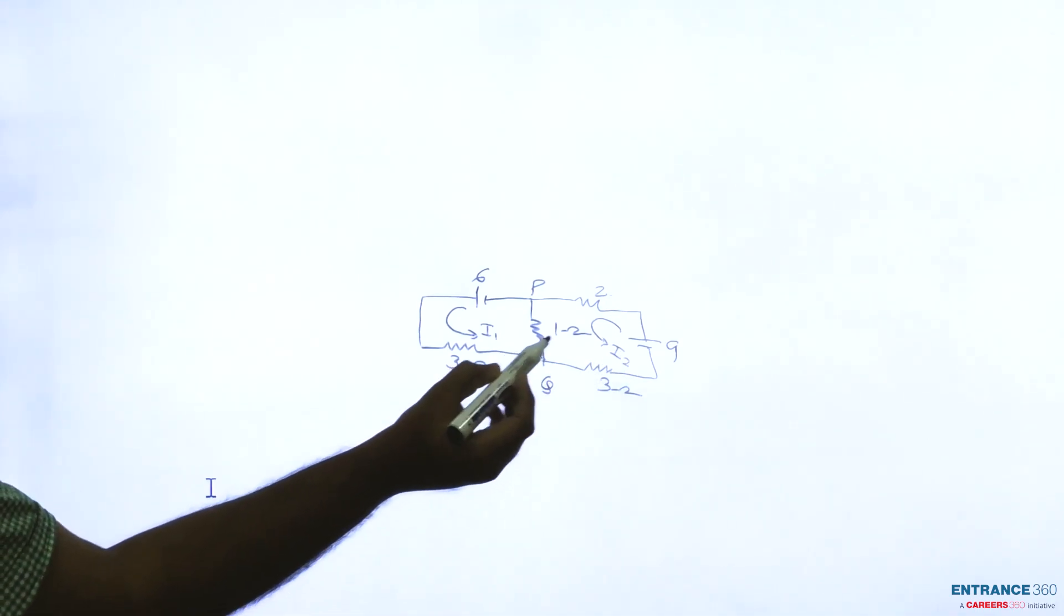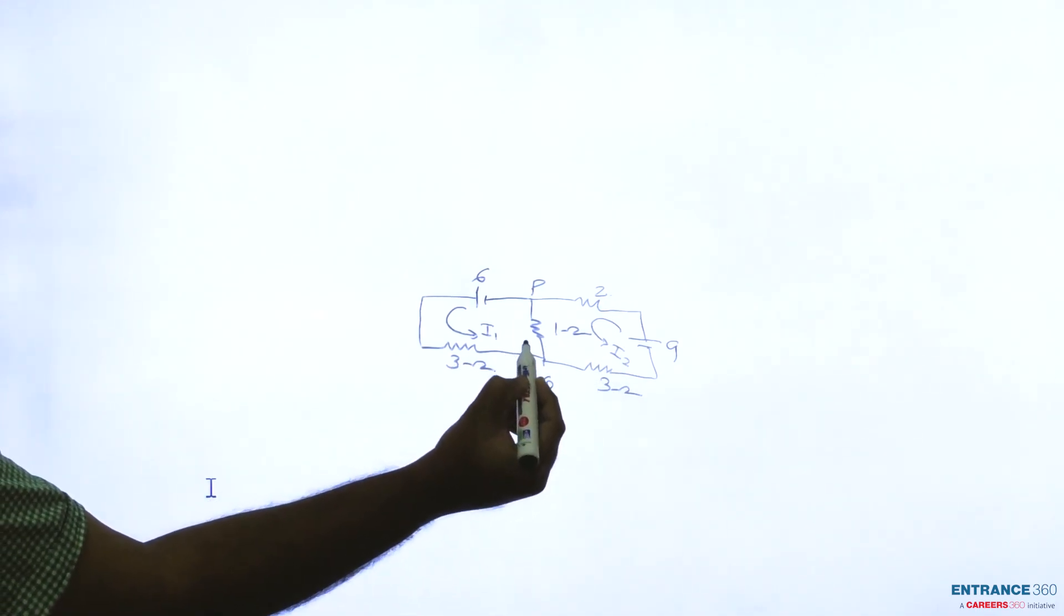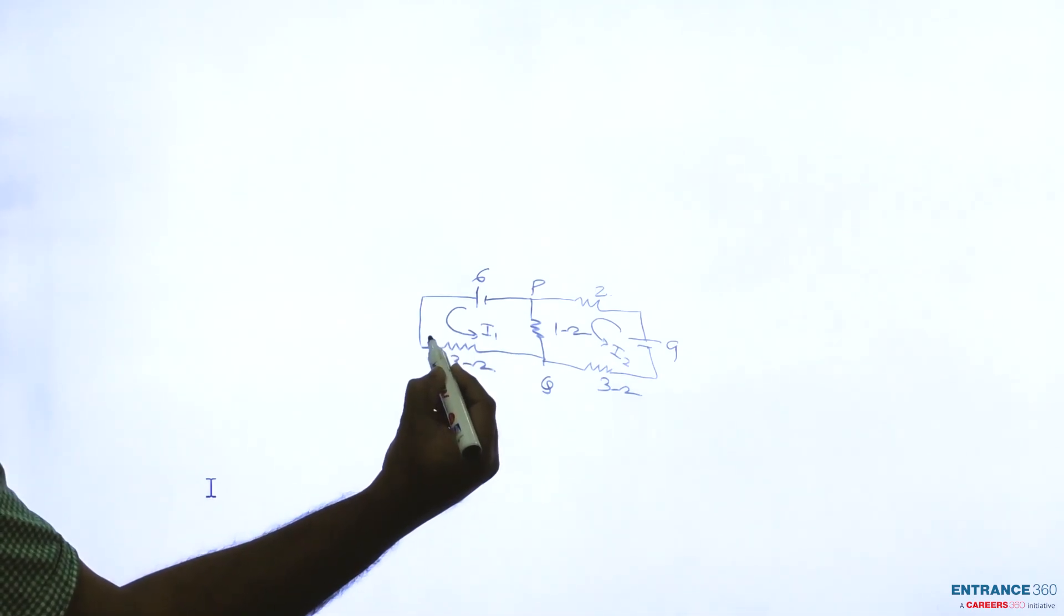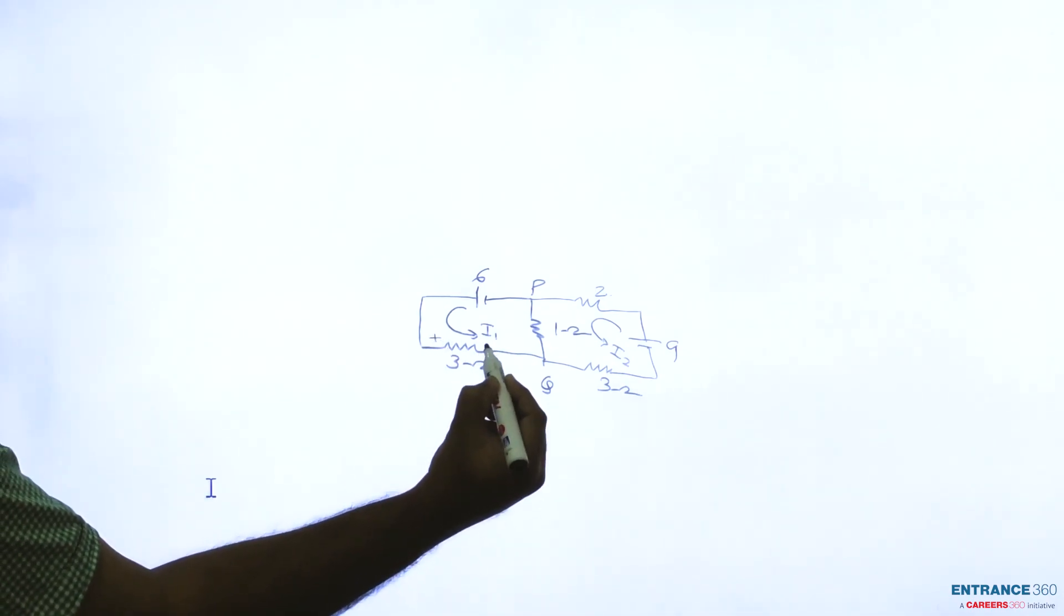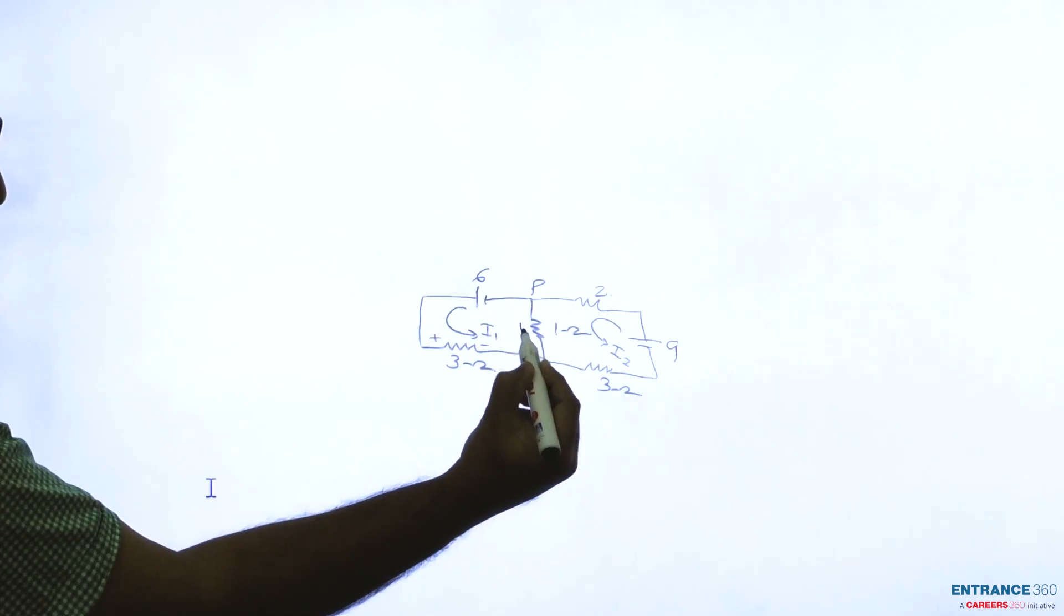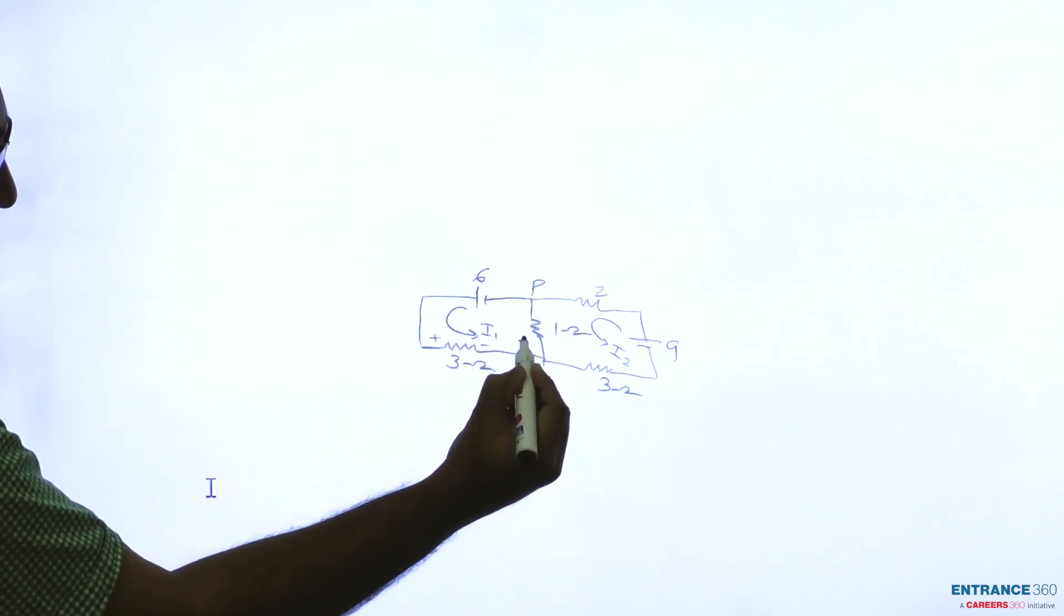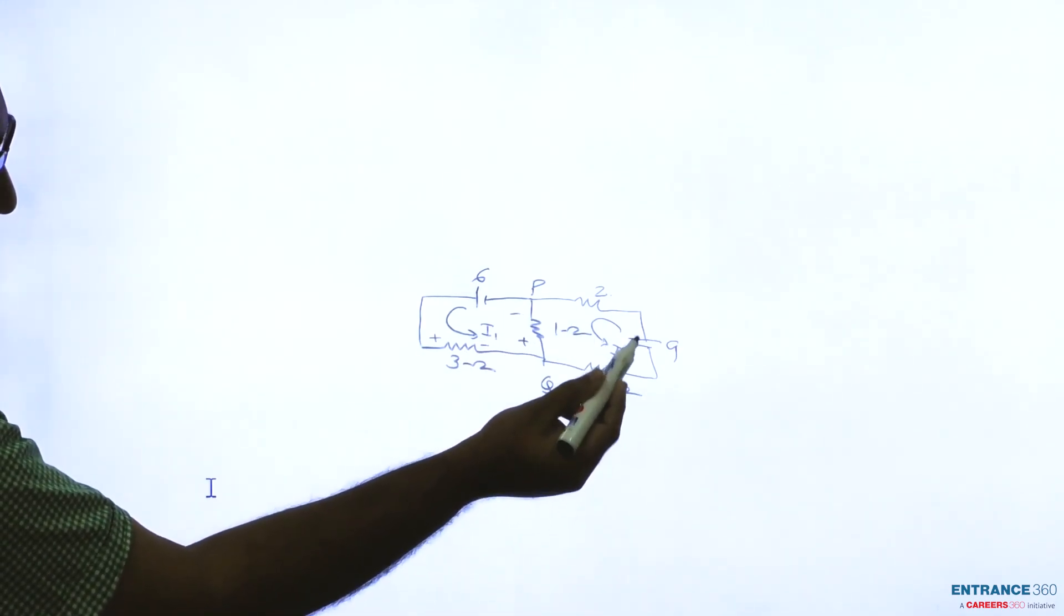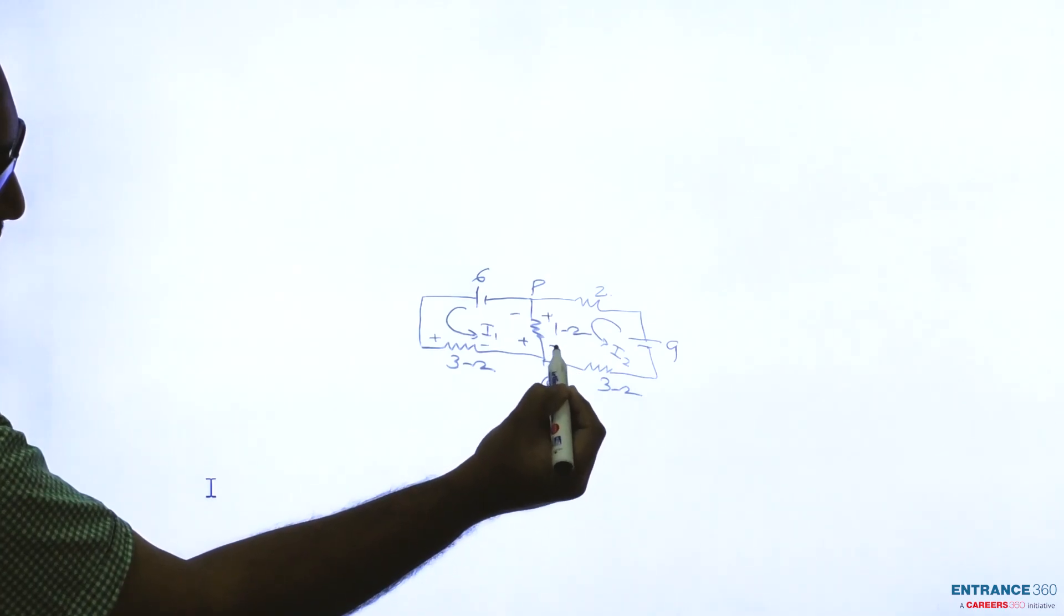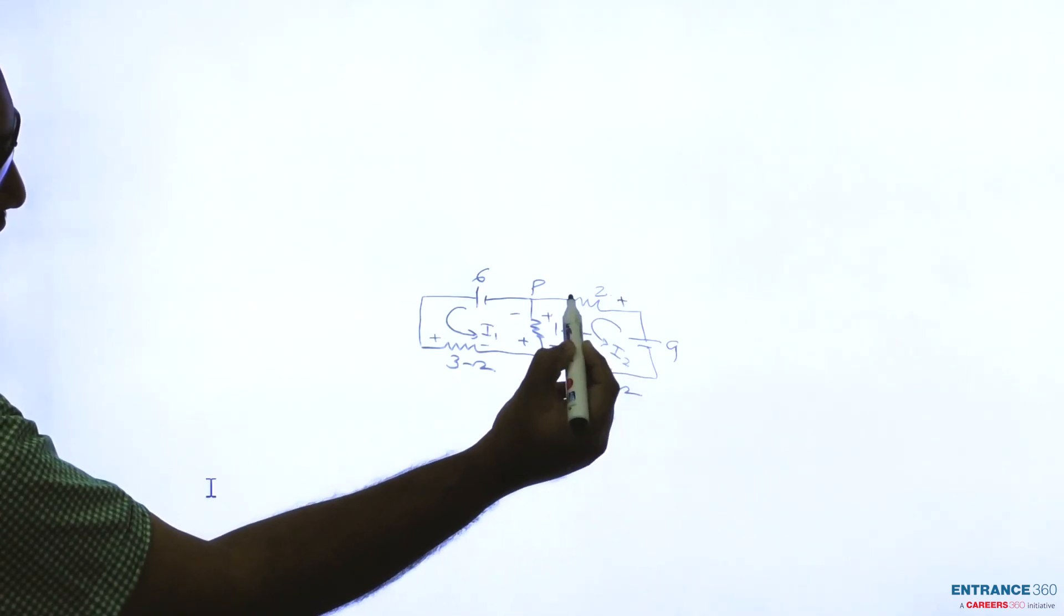If I1 is flowing in this direction, that is I1 is entering here, leaving, this is one ohm entering, leaving. Similarly I2 is entering here, leaving here, entering, leaving, entering and leaving.